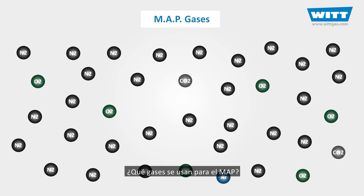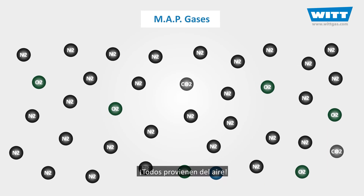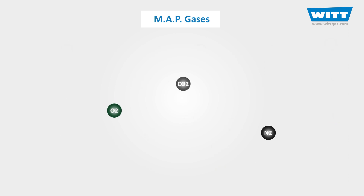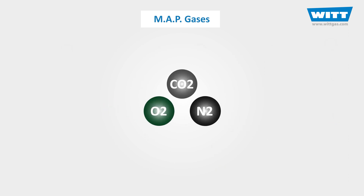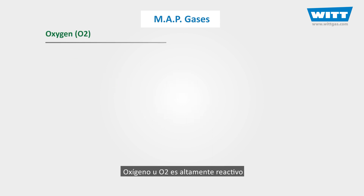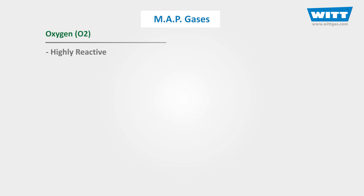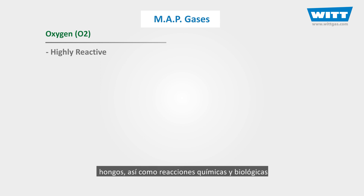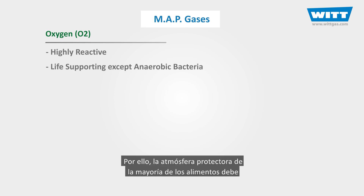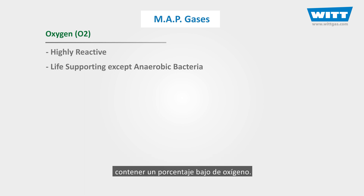So, what are these gases we use for MAP? All of these come from the air. The first one is oxygen, or O2. As we all know, oxygen is highly reactive and most of the common spoilage bacteria, fungi, and chemical and biological reactions require oxygen to live and grow. Therefore, to increase the shelf life of most foods, the pack atmosphere should contain a low concentration of oxygen.